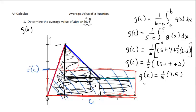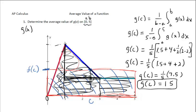7.5 divided by 5 is 1.5. That's exactly what we thought the y-value should be — a rectangle that has the same area as the value of the integral. So g of c equals 1.5. That's the answer. Let's look at the next one.